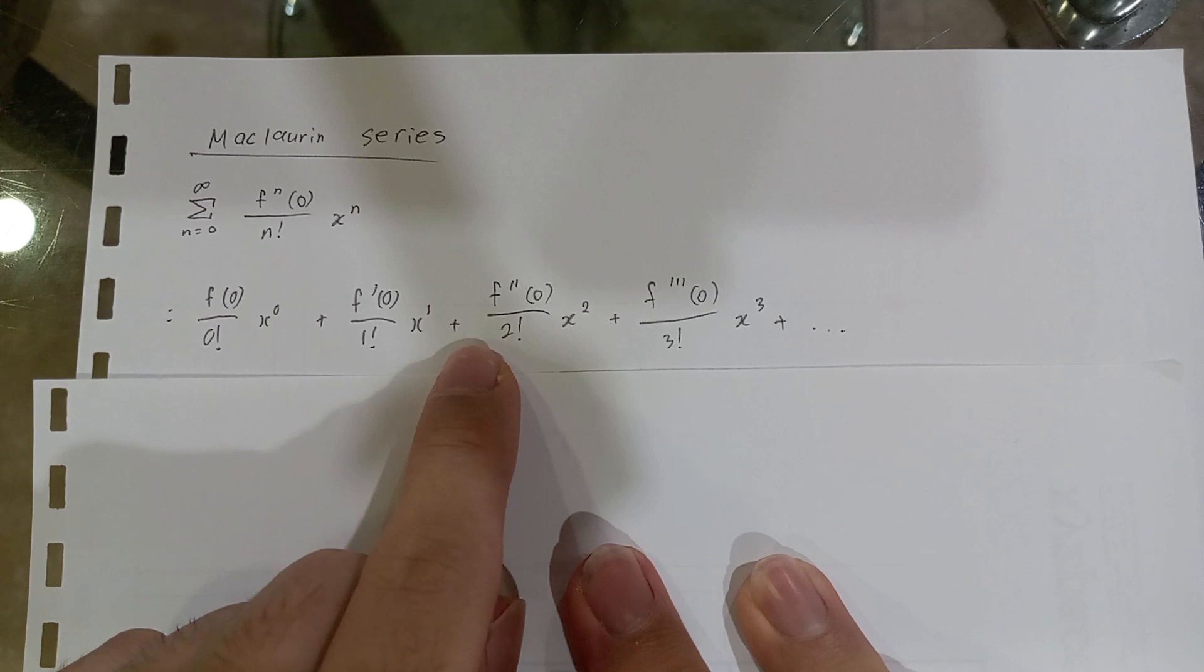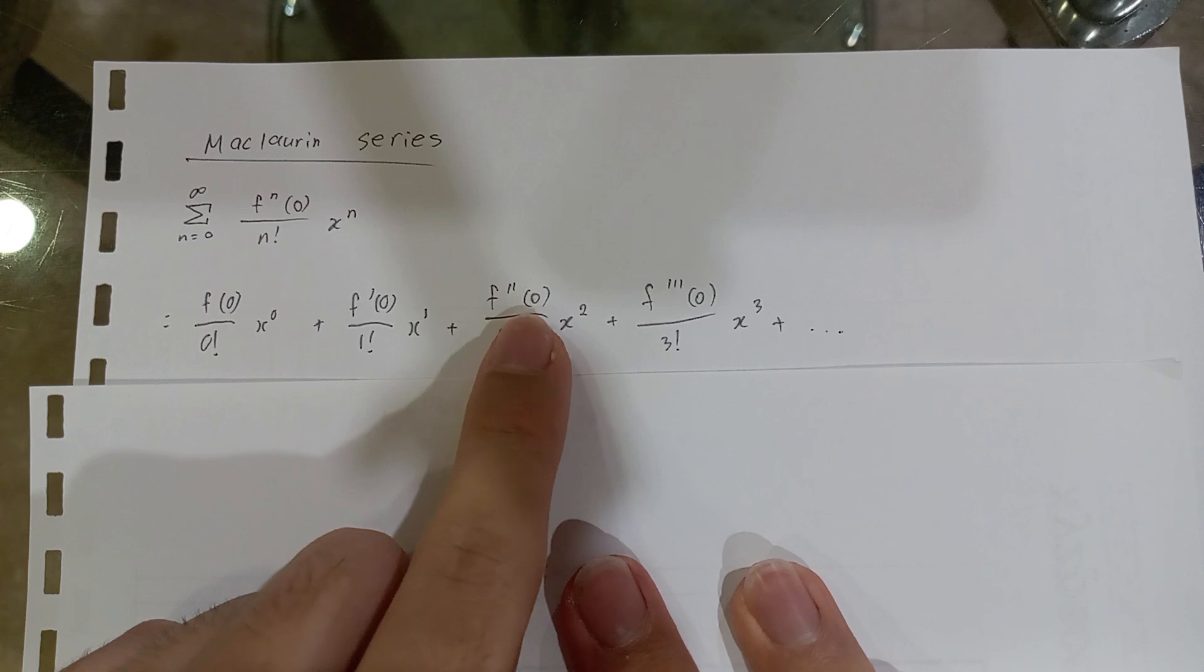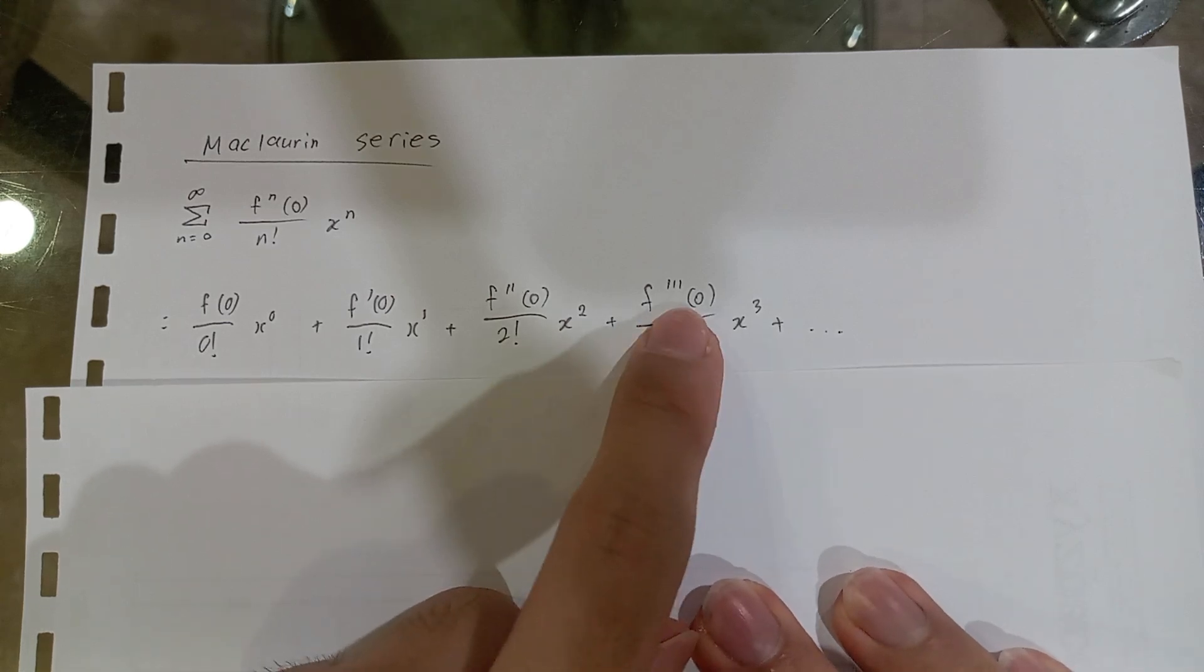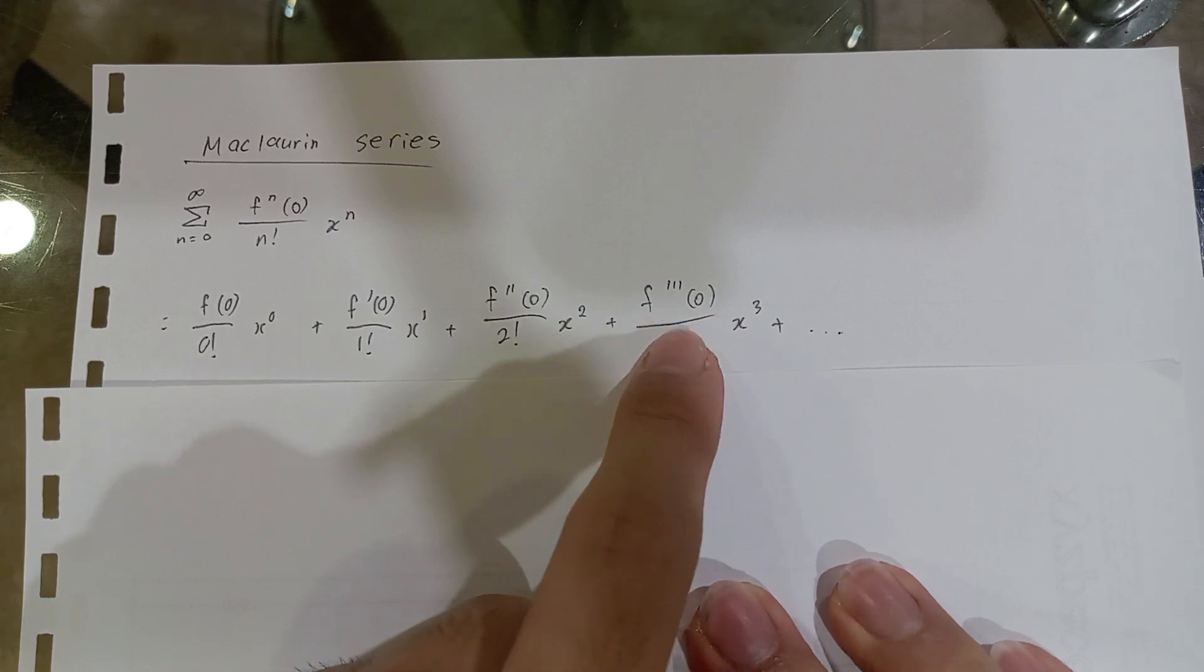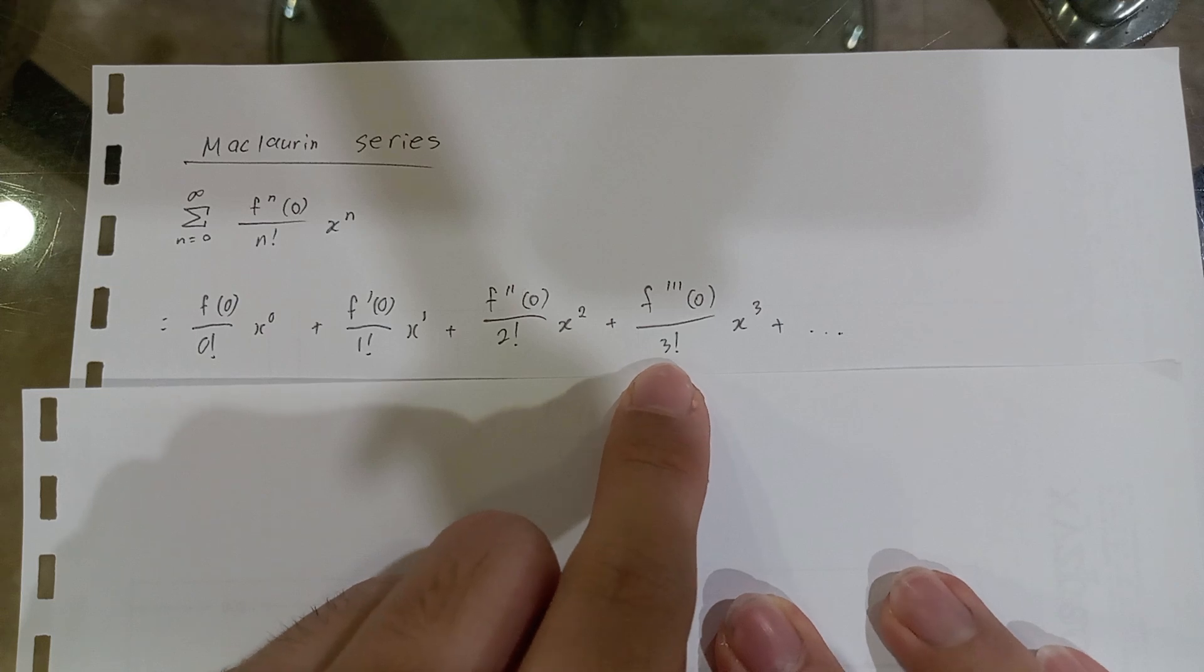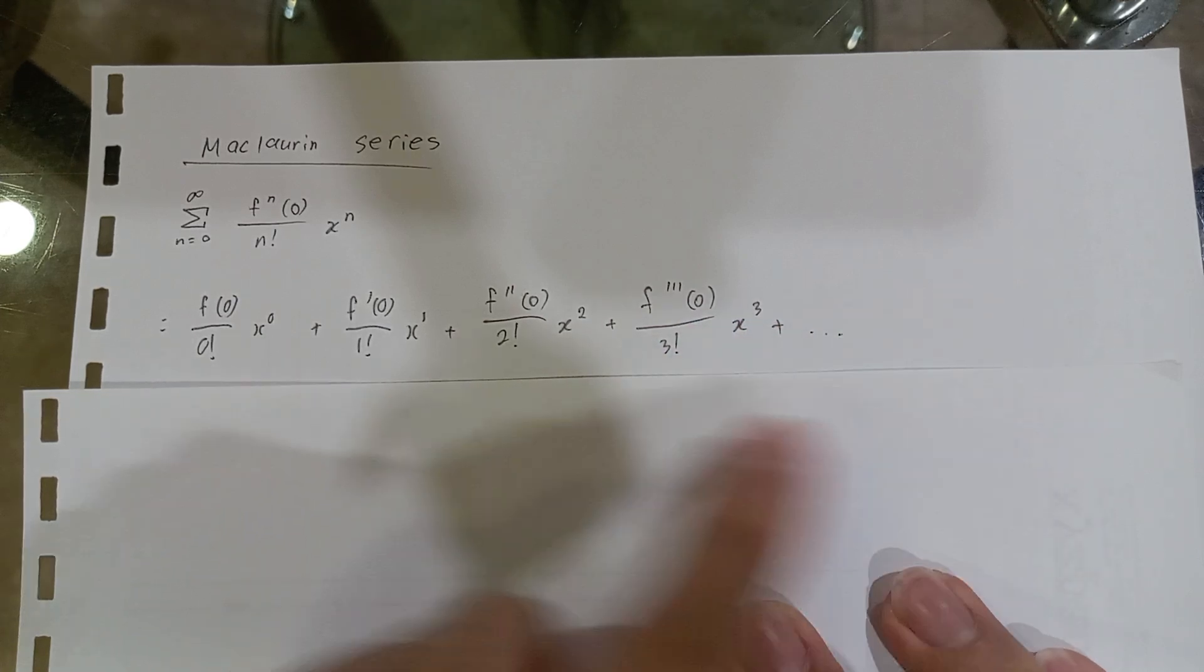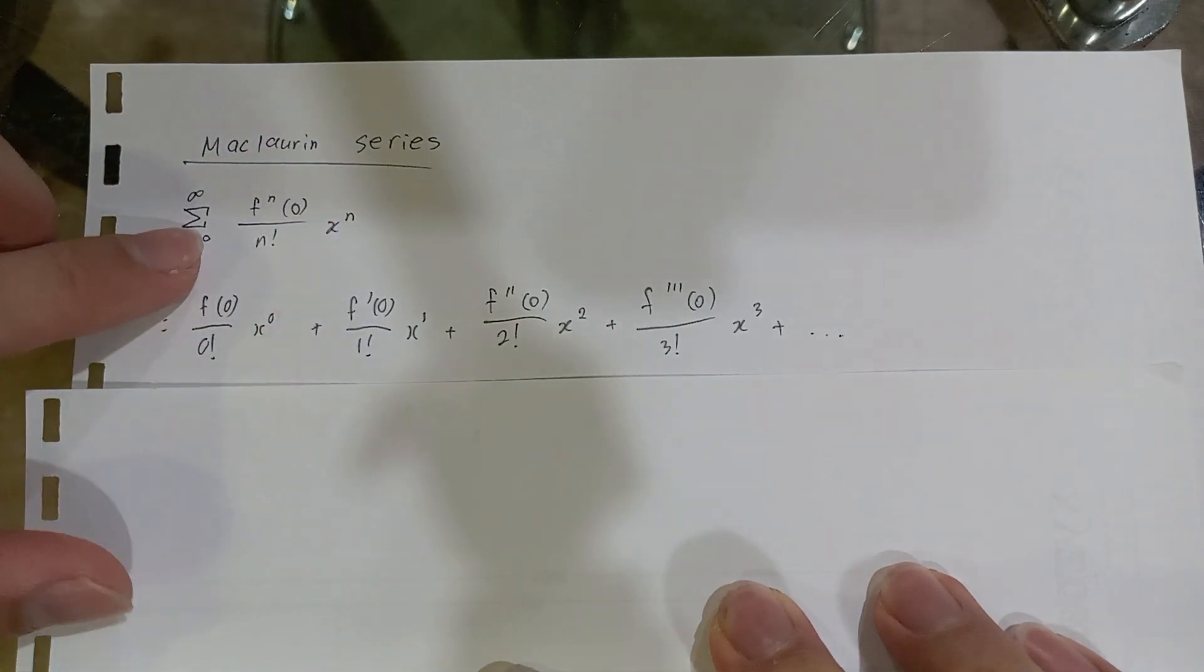Plus the second derivative (two apostrophes) at 0, divided by 2 factorial, times x squared. Plus f three apostrophes, meaning the third derivative, at 0, divided by 3 factorial, multiplied by x raised to the power of 3, and so on. You just have to add one number to the derivative order, factorial, and exponent. Everything else stays the same.